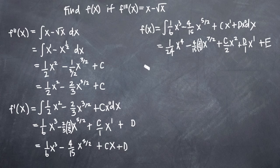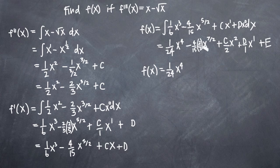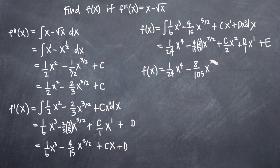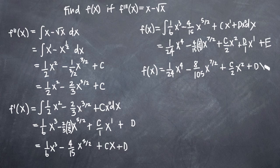When we simplify, we get our final answer for f of x: 1/24 x to the fourth, minus 8/105 x to the 7/2, plus c/2 x squared, plus dx, plus e. And that's it — that's our final answer.